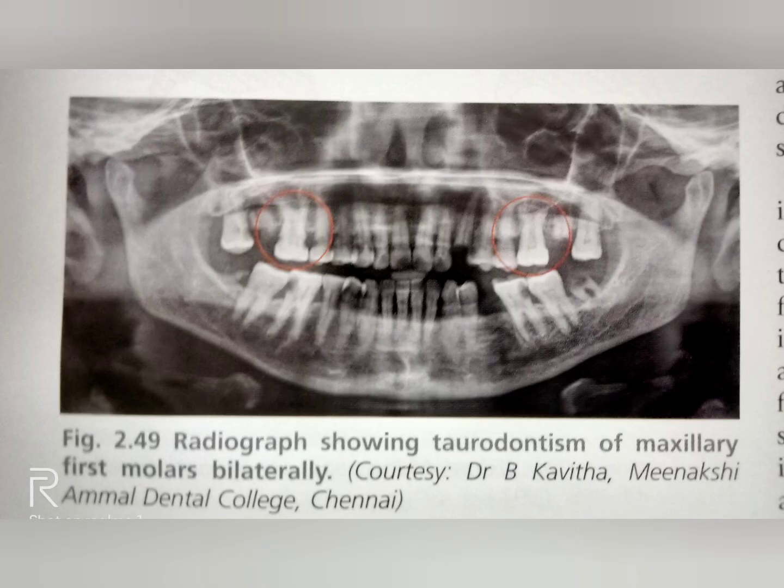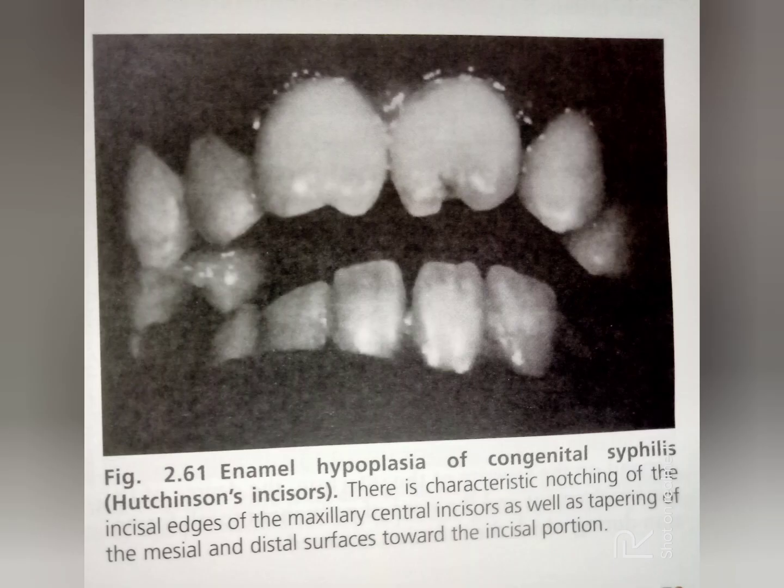Taurodontism of maxillary first molar bilaterally. Enamel hypoplasia of congenital syphilis. Hutchinson's incisor — the characteristic notching of the incisal edge.